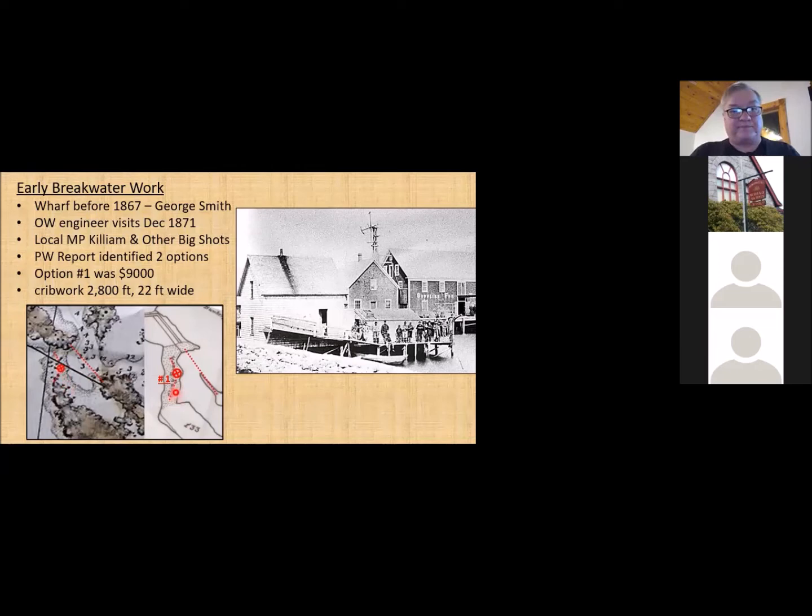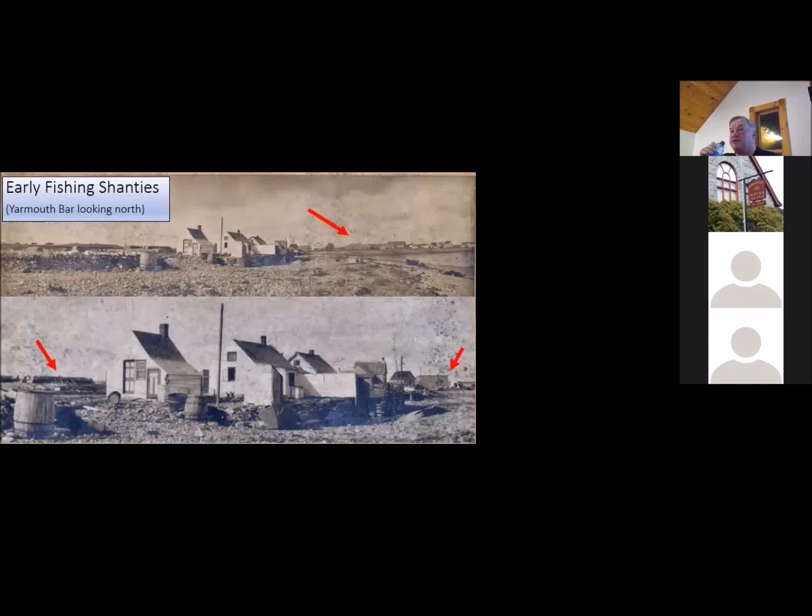The public works engineer, when he put his report into Ottawa, mentioned that there were two options for taking care of what needed to be done to protect Yarmouth Harbor. The first option, he estimated, was going to cost about $9,000, and it was going to involve putting in 2,800 feet of crib work. This option was to basically follow the existing crib work, which had been built over to the high point where that wharf was, and then to go the rest of the way over to the Cape.